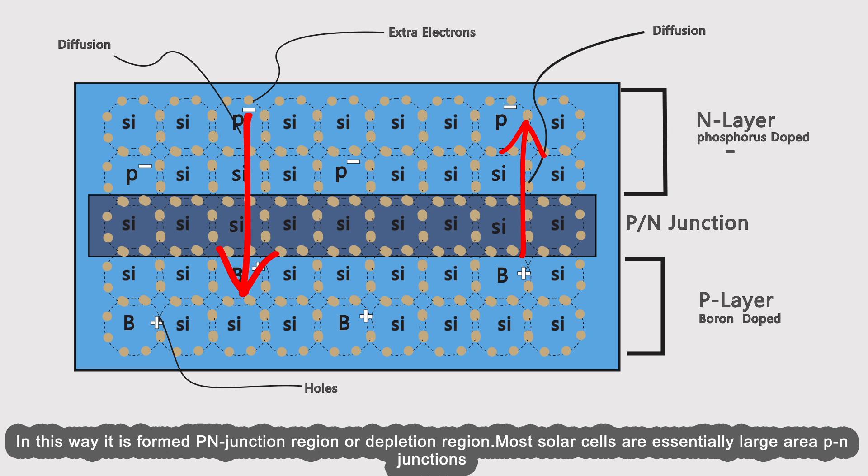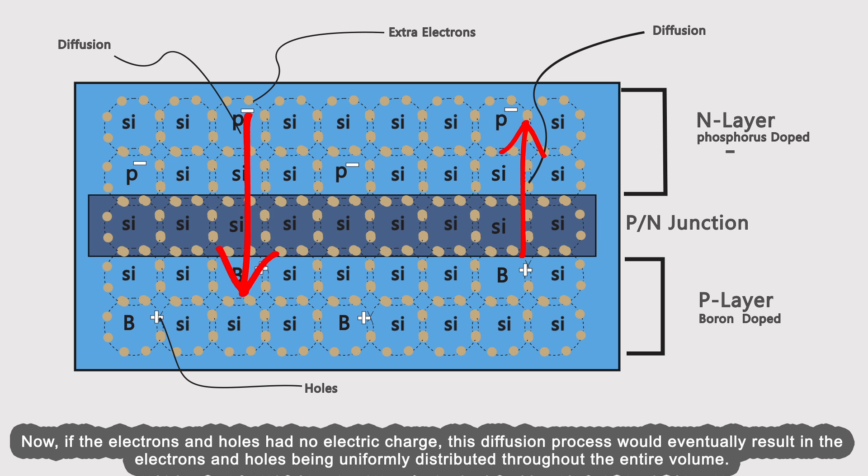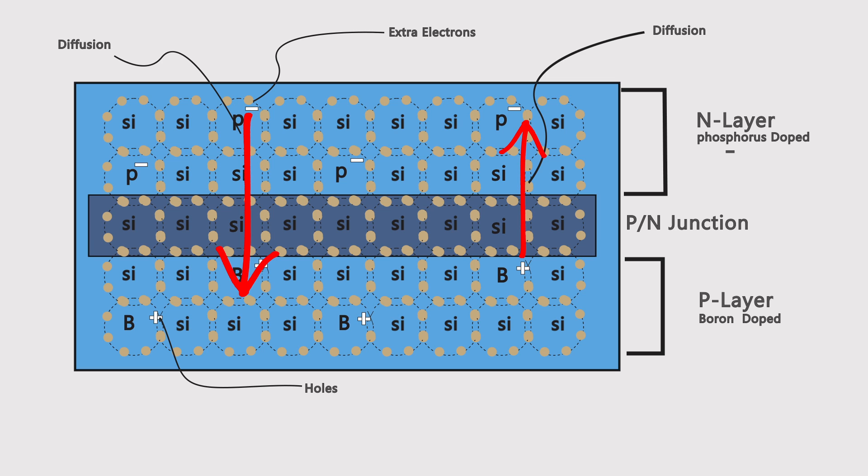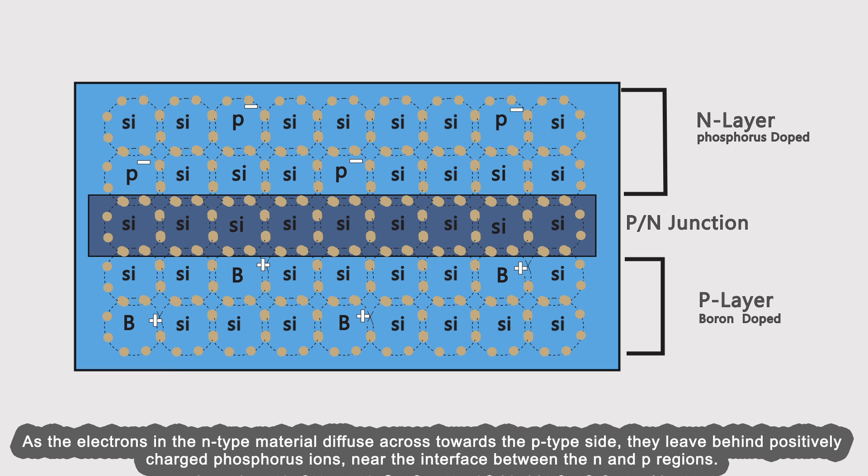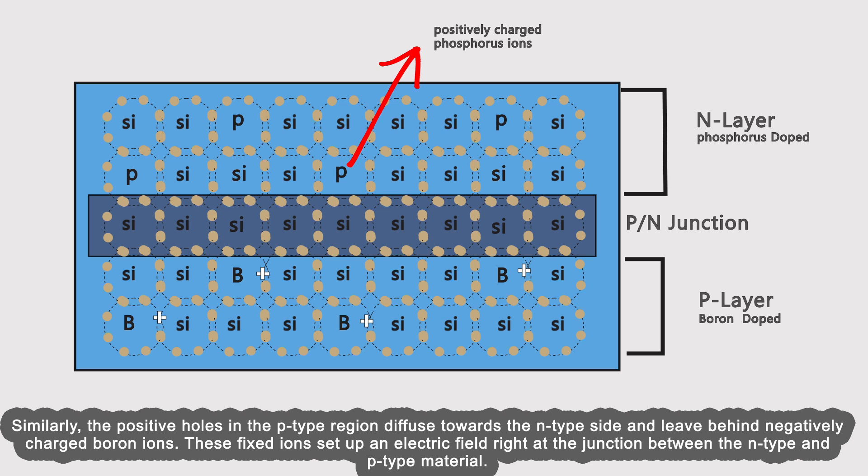Most solar cells are essentially large area p-n junctions. Now, if the electrons and holes had no electric charge, this diffusion process would eventually result in the electrons and holes being uniformly distributed throughout the entire volume. As the electrons in the n-type material diffuse across towards the p-type side, they leave behind positively charged phosphorus ions near the interface between the n and p regions. Similarly, the positive holes in the p-type region diffuse towards the n-type side and leave behind negatively charged boron ions. These fixed ions set up an electric field right at the junction between the n-type and p-type material.